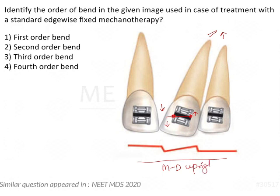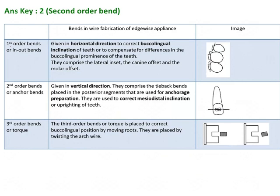This is going to cause mesiodistal uprighting of this tooth. Now we have to identify which type of bend it is in standard edgewise fixed mechanotherapy. There are three types of bends: first order bends, second order bends, and third order bends.